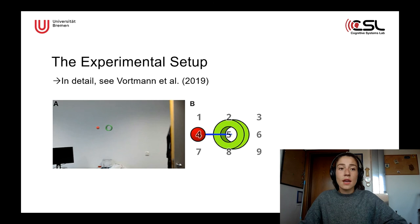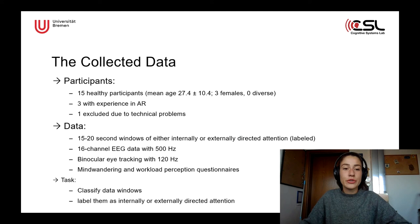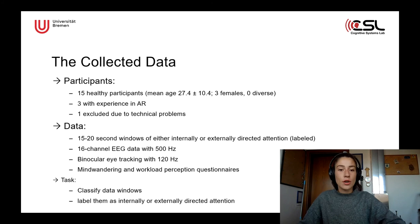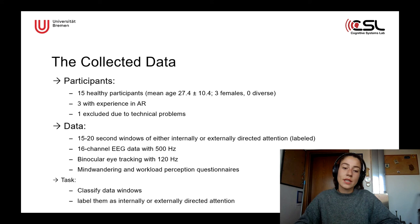For this study, the experimental setup was described in another publication, so please refer to that for detail. The collected data was from 15 healthy participants, three of which had previous experience in AR. One dataset had to be excluded due to technical problems. The data consisted of 15 to 20 second windows of either internally or externally directed attention, which was labeled. We recorded 16 channels of EEG data and binocular eye-tracking, and additionally had participants fill out questionnaires. Our main task was to classify these data windows as either internally or externally directed attention, and see how accurate these labels could get.